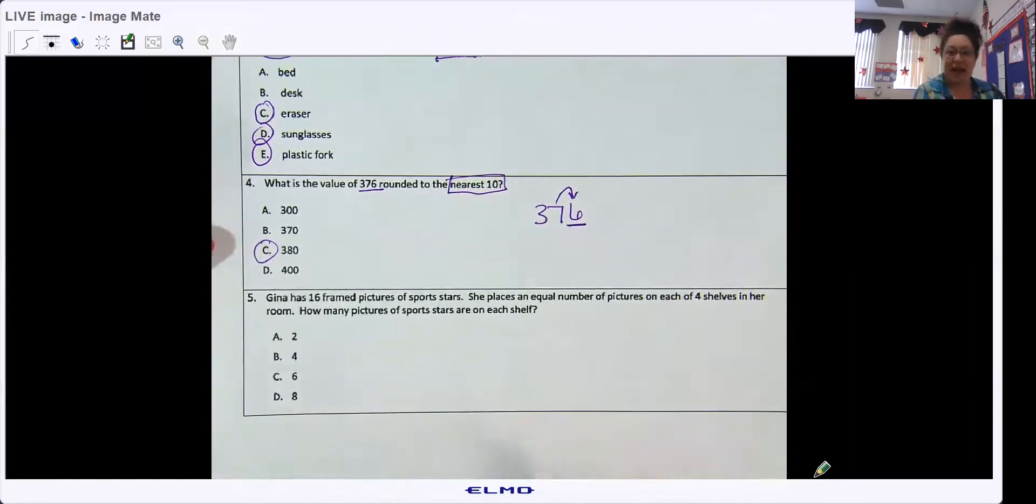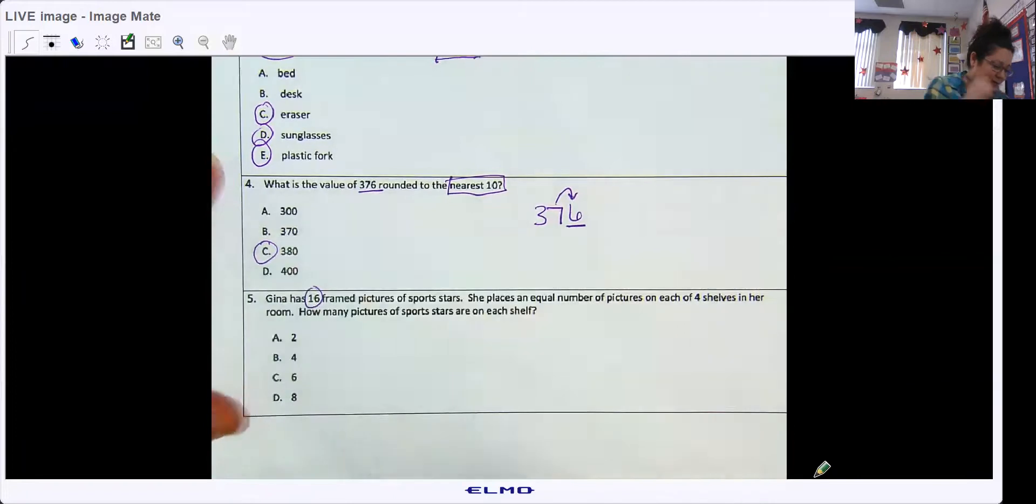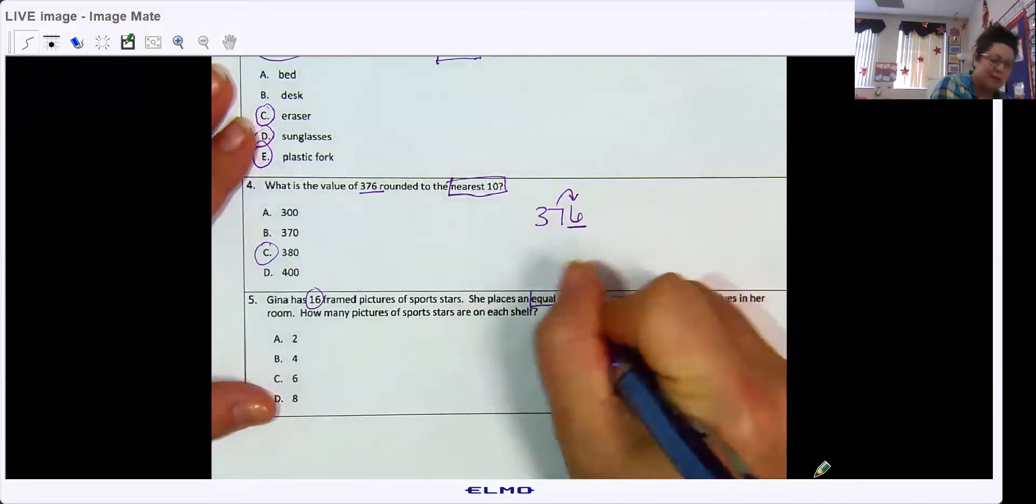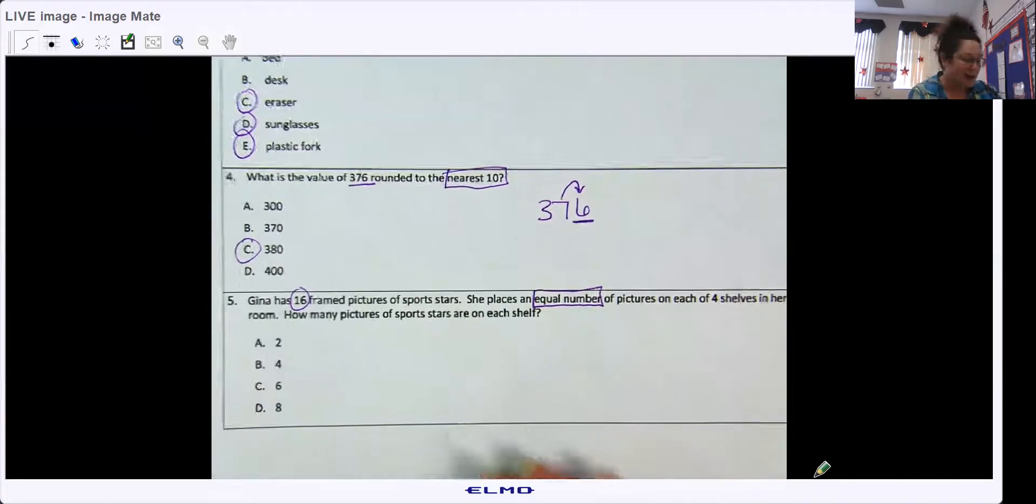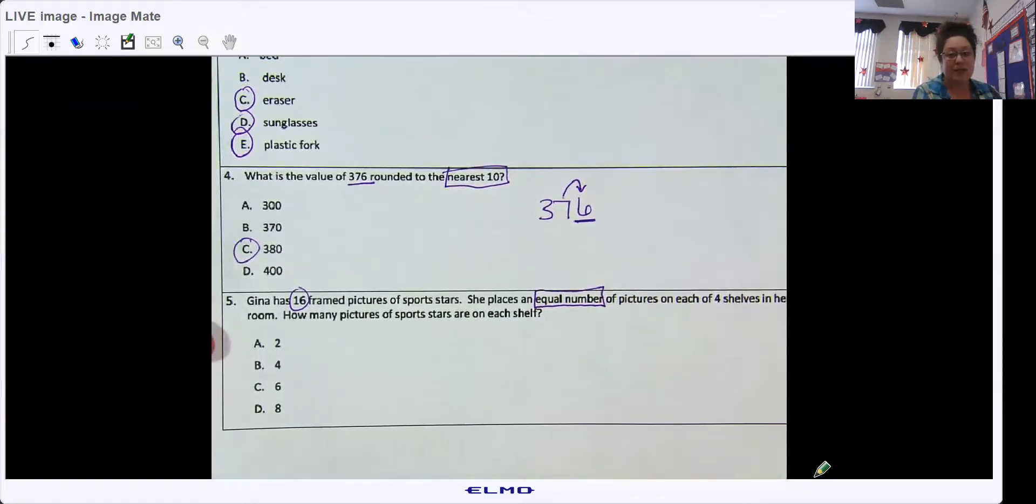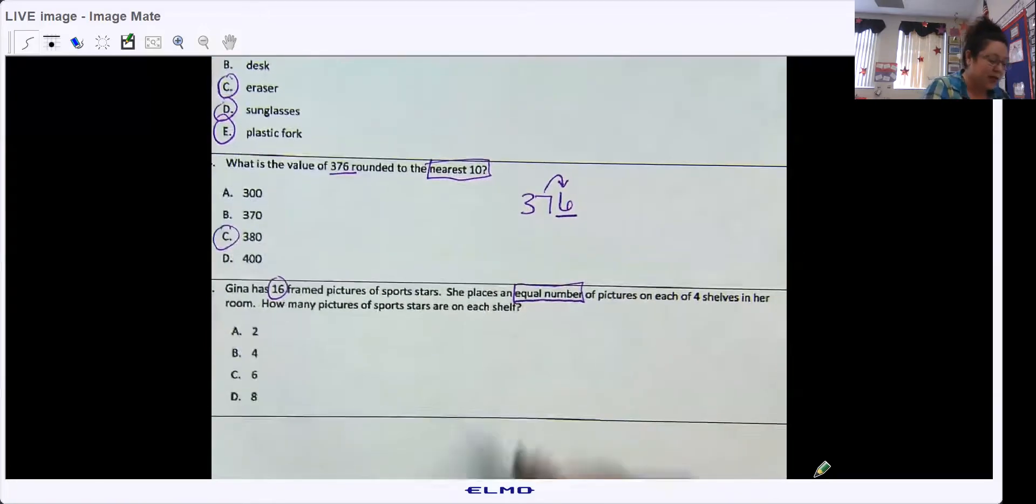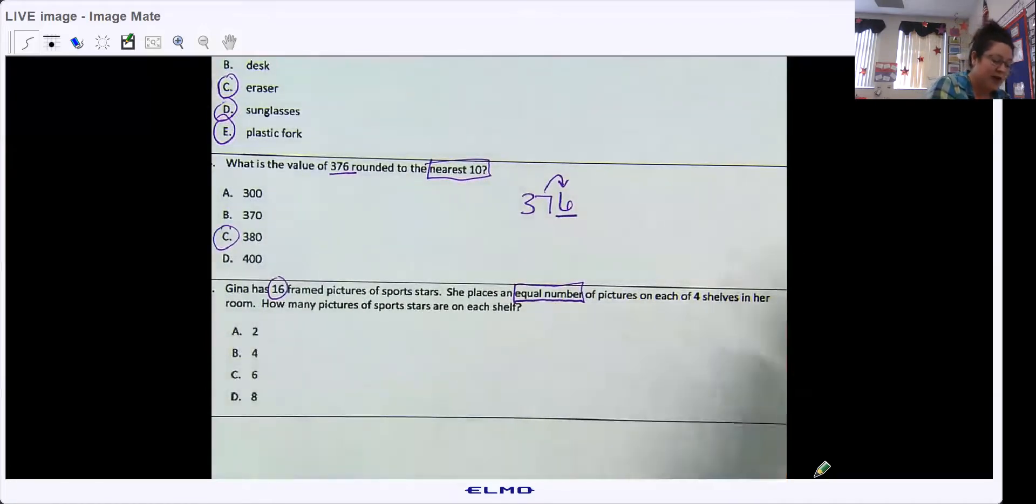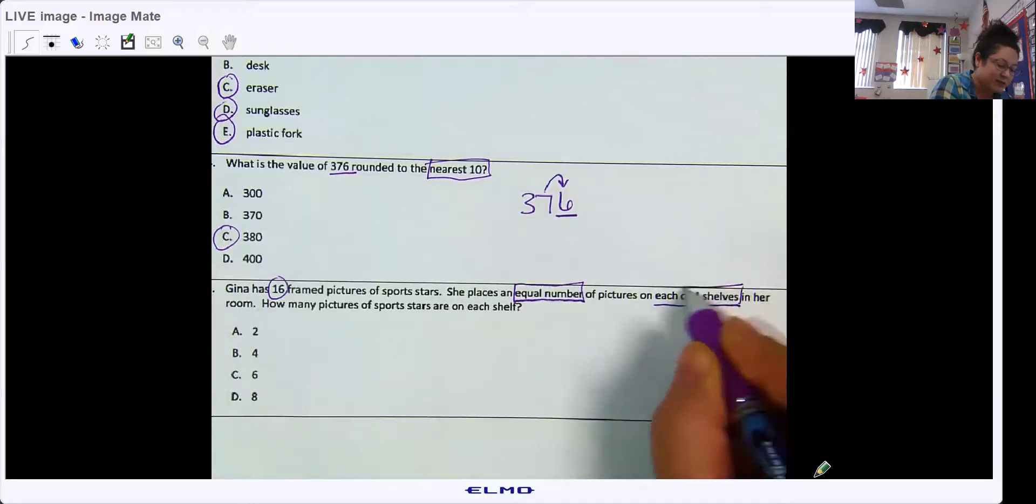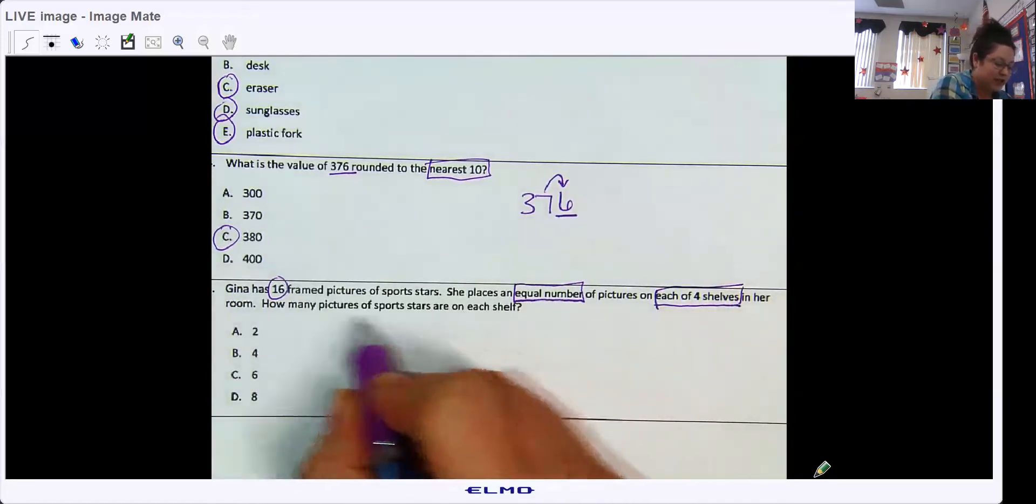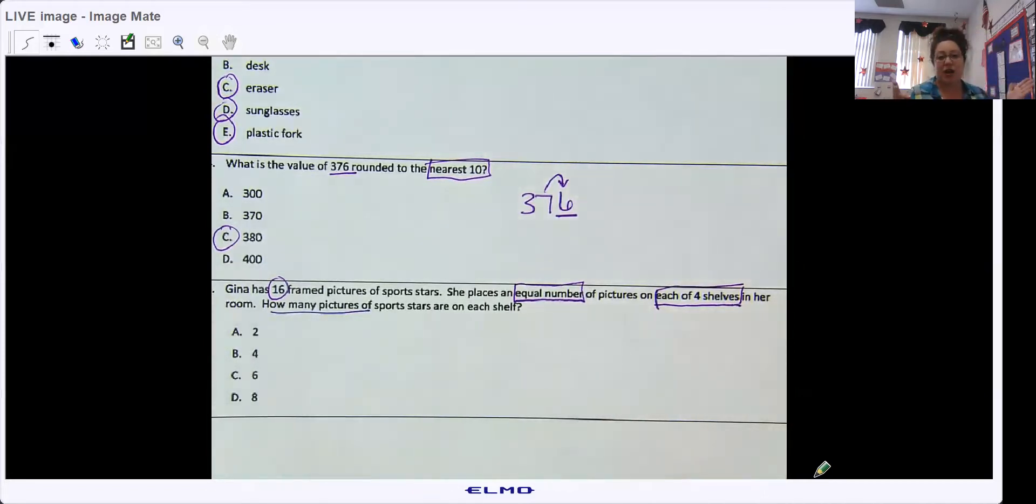Gina has framed pictures of sports stars. She has 16 of them. She places an equal number, remember I box my clues, equal number, that right away tells us we're probably going to divide. She places an equal number of pictures on each of four shelves. How many pictures of sports stars are on each shelf? I have 16 pictures all together, so my number is not going to get bigger. So I know right away I'm either dividing or subtracting, I'm not adding or multiplying because my number is going to get bigger.